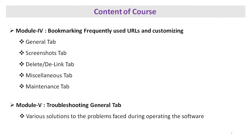Module four covers bookmarking frequently used URLs and customizing — including the general tab, screenshots tab, delete/dealing tab, miscellaneous tab, and maintenance tab. Module five is troubleshooting, covering the general tab and various solutions to problems faced during operating the software, where most solutions to common problems are provided.